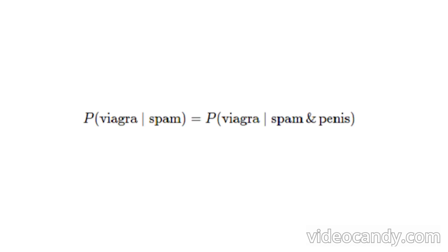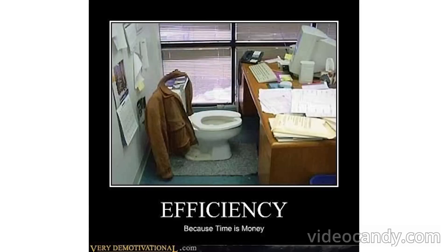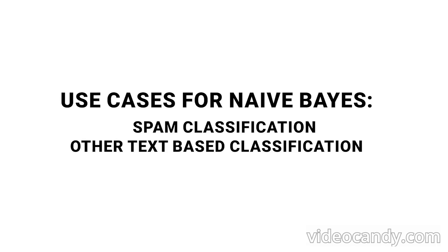We simply multiply the different probabilities of all words in the email together. This algorithm makes the false assumption that the probabilities of the different words appearing are independent of each other, which is why we call this classifier naive. This makes it very computationally efficient, while still being a good approximation for many use cases such as spam classification and other text-based classification tasks.